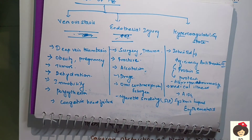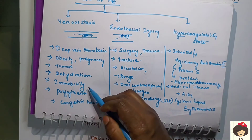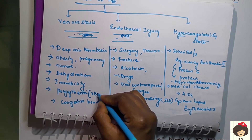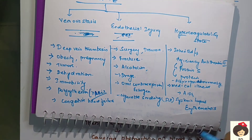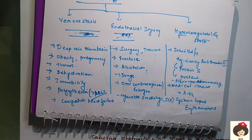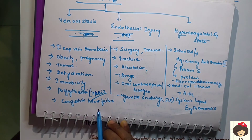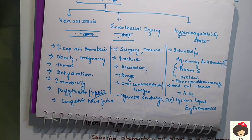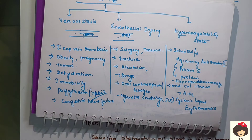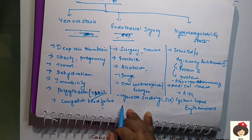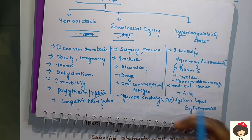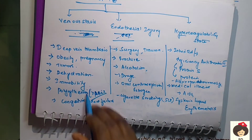Polycythemia — increased RBC in the blood — raises blood concentration, making patients more prone to clot formation. Congestive heart failure is a condition where the heart cannot pump properly; blood back-flows and congests the veins, making them easily prone to clot formation. These are all the causes under venous stasis.